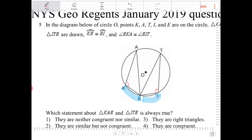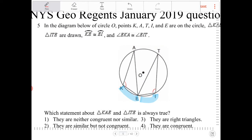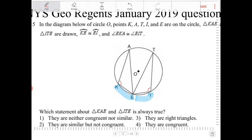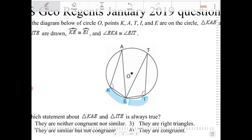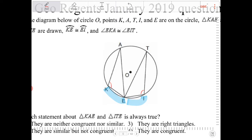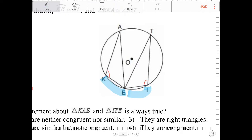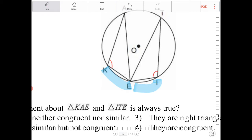Alright, so which statement about triangle K-A-E and triangle I-T-E is always true? Looking at this information, we need to recall some theorems about circle geometry. If I have congruent arcs, they will intercept congruent chords. So which chords are going to be congruent as a result? Chord K-E will be congruent to I-E because they both intercept congruent arcs.